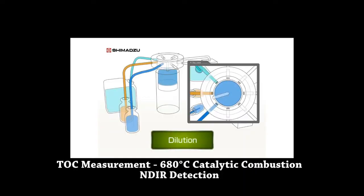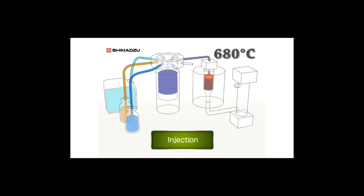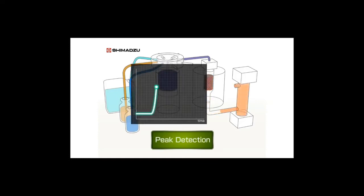In the APHA 5310B method, the water sample is first diluted, then acidified and sparged. After sparging, inorganic carbon is removed from total carbon. The sample is then injected into a combustion oven and heated at 680°C with a catalyst. The sample is oxidized, liberating carbon dioxide, which is measured using an NDIR detector to obtain the TOC value.